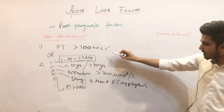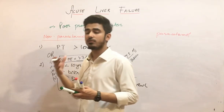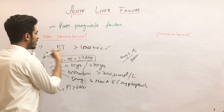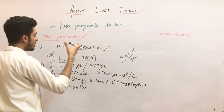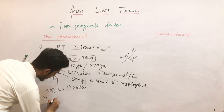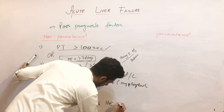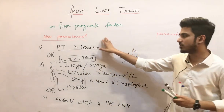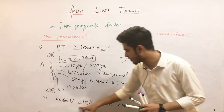To summarize the non-paracetamol cases: prothrombin time greater than 100 seconds alone is a poor prognostic factor. Alternatively, if any three of the five factors are present, that also indicates poor prognosis. Or, factor V activity less than 15% combined with hepatic encephalopathy grade three and grade four is also a poor prognostic factor.